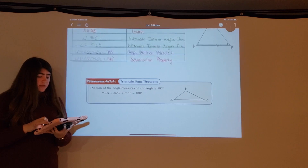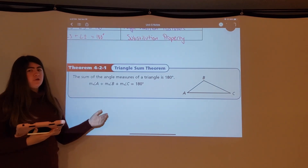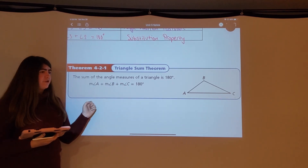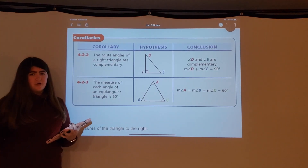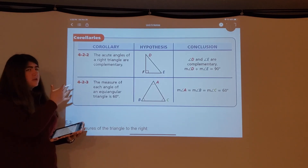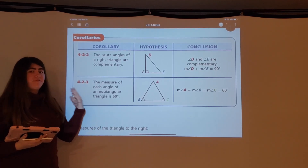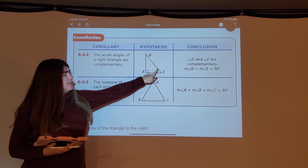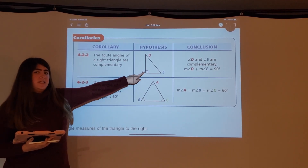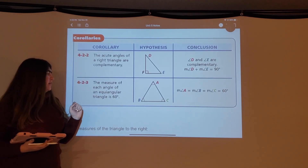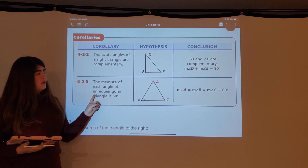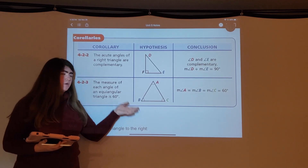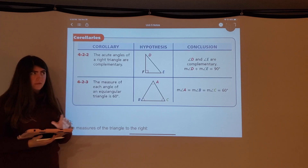That is the triangle sum theorem: the sum of all angle measures of a triangle is 180 degrees. From this we can draw two corollaries: the acute angles of a right triangle are complementary, since the third angle is already 90 degrees; and the measure of each angle of an equiangular triangle is 60 degrees, since all angles are congruent and must sum to 180 degrees.